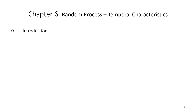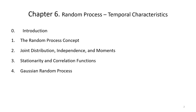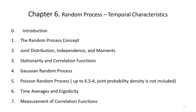Here is the plan for the temporal characteristics. We will start with a quick introduction, then go on to the random process concept, and then we'll look at joint distribution, independence, and moments. We'll look at stationary and correlation functions. We'll focus more on Gaussian random processes, then we'll look at Poisson random processes, and we'll also look at time averages and ergodicity. We'll conclude with some techniques to measure correlation functions.